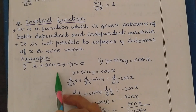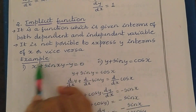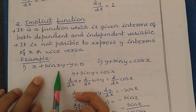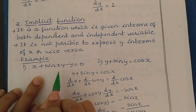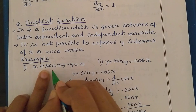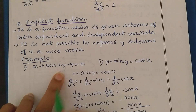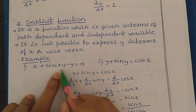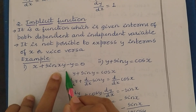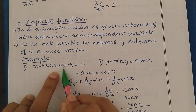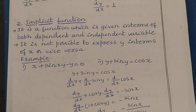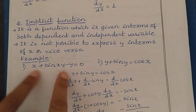For example, here we have x plus sin(xy) minus y is equal to 0. Can we express this as an explicit function? That is not possible. Here, xy is an angle inside the sine function, so it is not possible to separate x and y. You can't write x and y separately — these two things come together. So you can't express this in terms of one variable. The function itself has both the dependent and independent variable together.